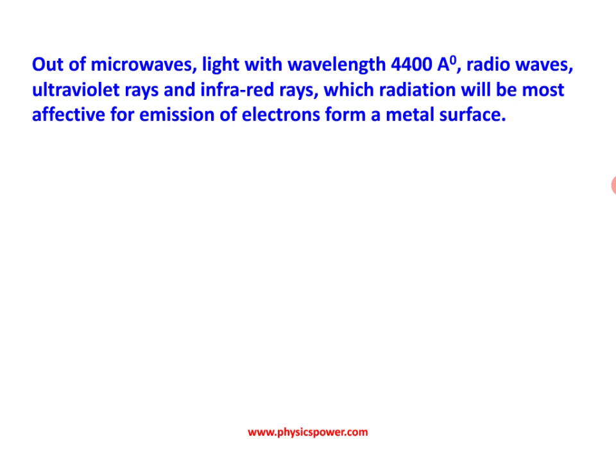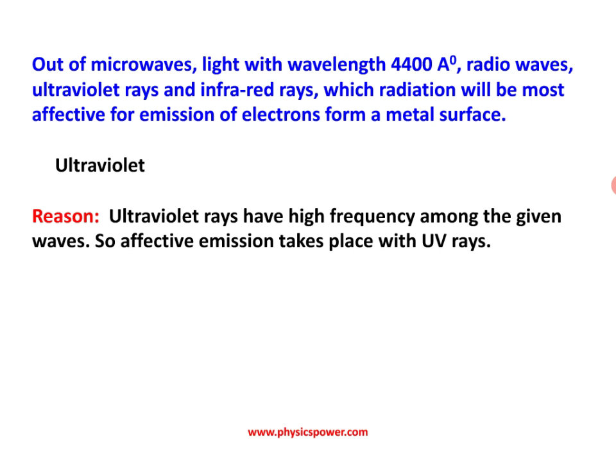Next question: out of microwaves, light with wavelength 4400 angstrom (visible region), radio waves, ultraviolet rays, and infrared rays, which radiation will be most effective for emission of electrons from the metal surface? Radio waves cannot cause the photoelectric effect because their wavelength is large and energy is very less. Infrared is also not possible. Light of 4400 angstrom is only possible for particular metals. But ultraviolet rays have very high frequency, so they can comfortably pick out electrons from the metal surface. The answer is ultraviolet rays, as they have very high frequency and cause effective emission.